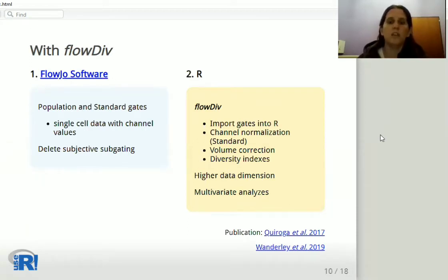FlowDiv directly imports the gates into R containing single cell data with multiple channel values. FlowDiv implements channel normalization and volume correction before calculating diversity indexes.